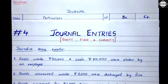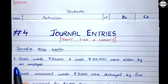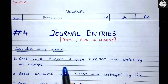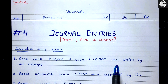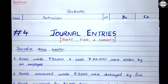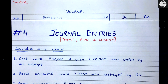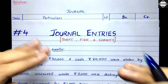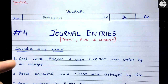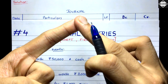Let's start with the first transaction. Goods worth 50,000 and cash rupees 20,000 were stolen by an employee. A theft has taken place — we have lost the goods and cash because of this robbery. Goods means purchases account — whenever goods meant for resale are involved, we always take the purchases account. So purchase account and cash account are affected.